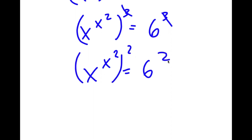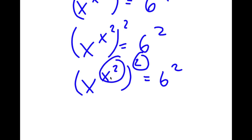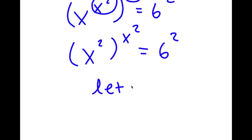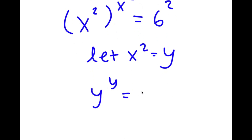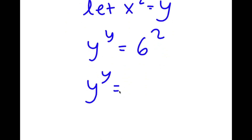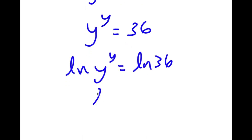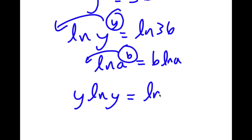Now I'm going to take both sides to the power of 2. So I have x to the power of x squared to the power of 2 equals 6 squared, and switching the exponents gives x squared to the power of x squared equals 6 squared. Now I can let x squared equal to the variable y, so I have y to the power of y equals 36. Taking the natural log on both sides gives ln(y^y) equals ln(36), and moving the exponent to the front gives y times ln(y) equals ln(36).